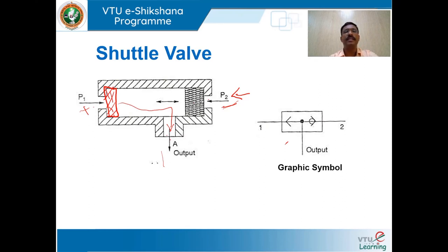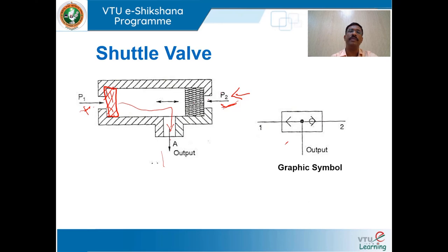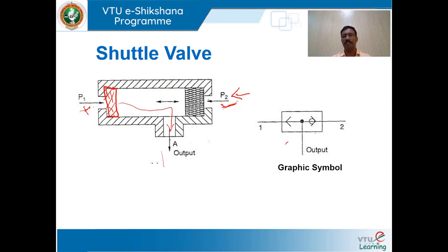When signals are present at both P1 and P2, depending on the pressure strength, either P1 or P2 connects with A. A shuttle valve works like a toggle — the ball moves between P1 and P2. This is the corresponding symbol for the ball type shuttle valve.